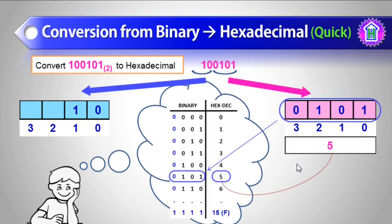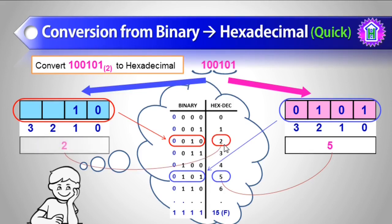Similarly, for this 10, 10 will be 0010, and I can find it here. And I can see the hexadecimal equivalent is 2, so I can directly write this number as 2. So this is how we can quickly calculate hexadecimal equivalent of a binary number.